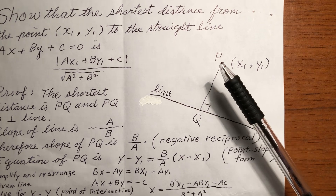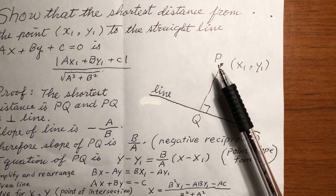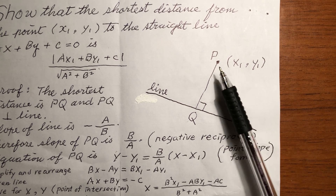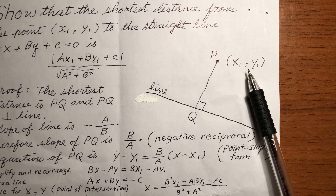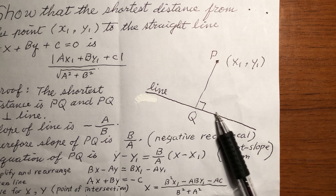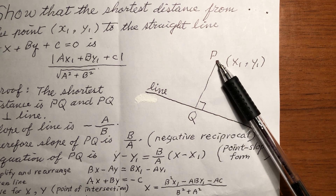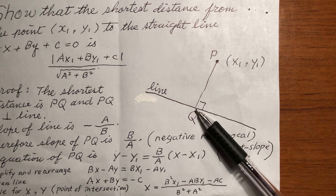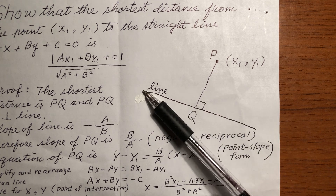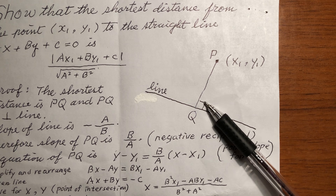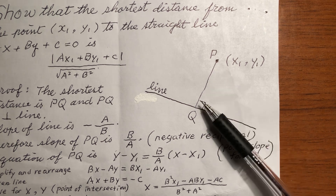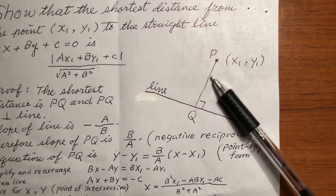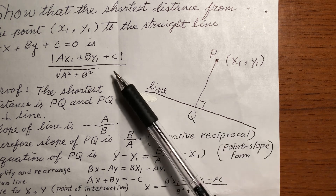Here is a graph. You have a point — let's call it P. The coordinate of point P is x1, y1. Now, this is a line, and you want the shortest distance from P to this line. The shortest distance is a perpendicular distance, so you draw a line perpendicular to the given line. This is 90 degrees. This distance PQ is the shortest distance, and we want to prove the magnitude of this shortest distance is this.